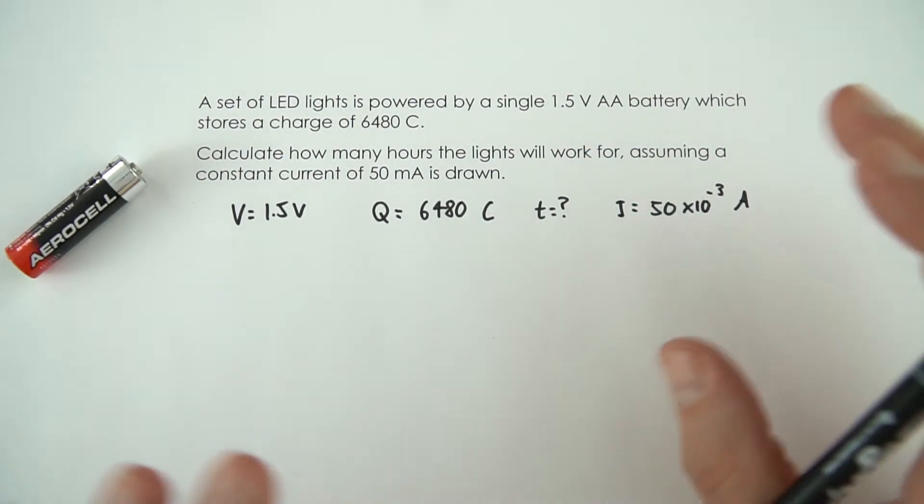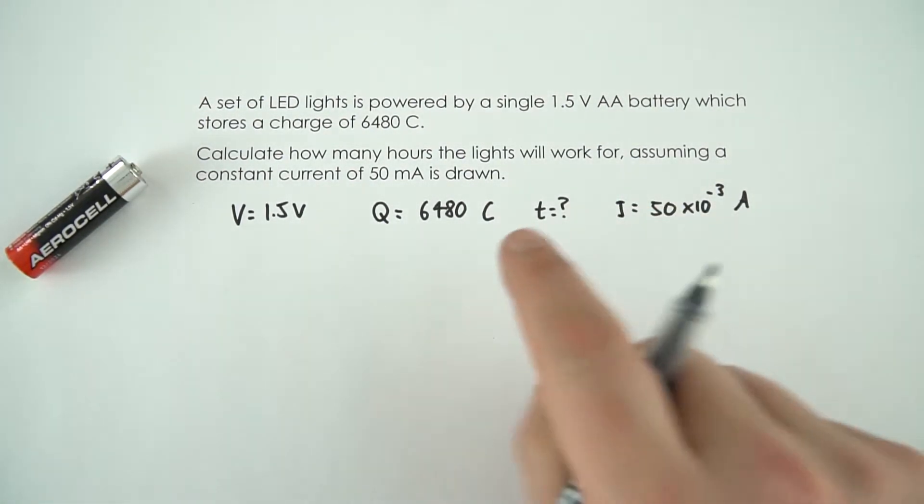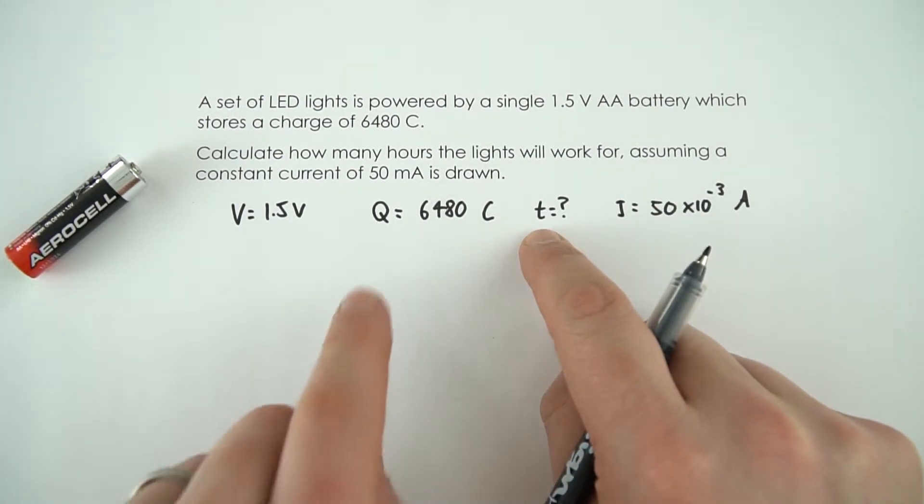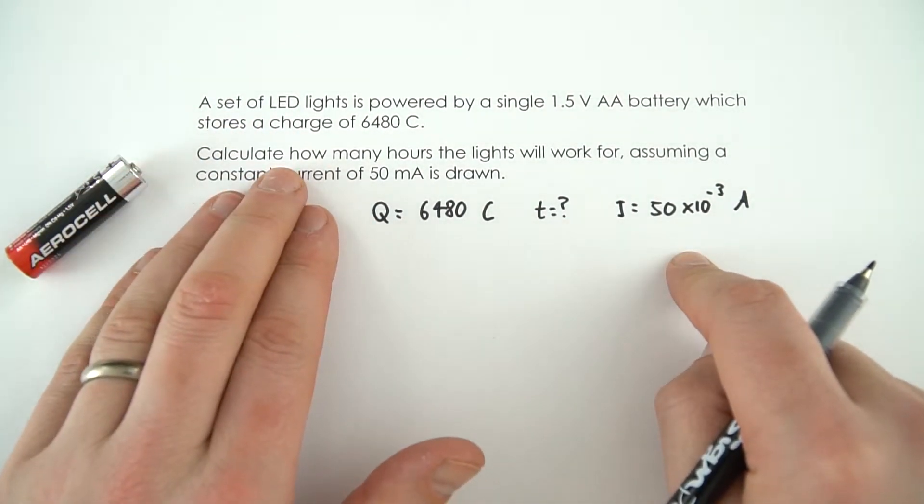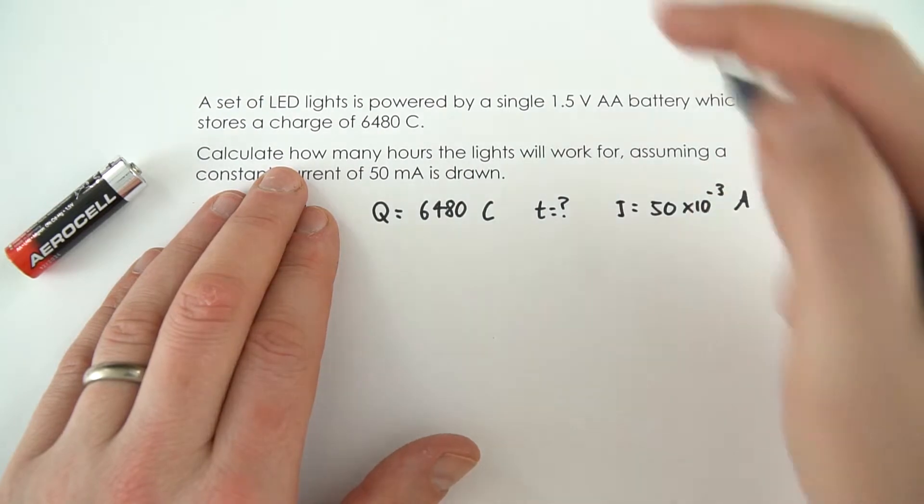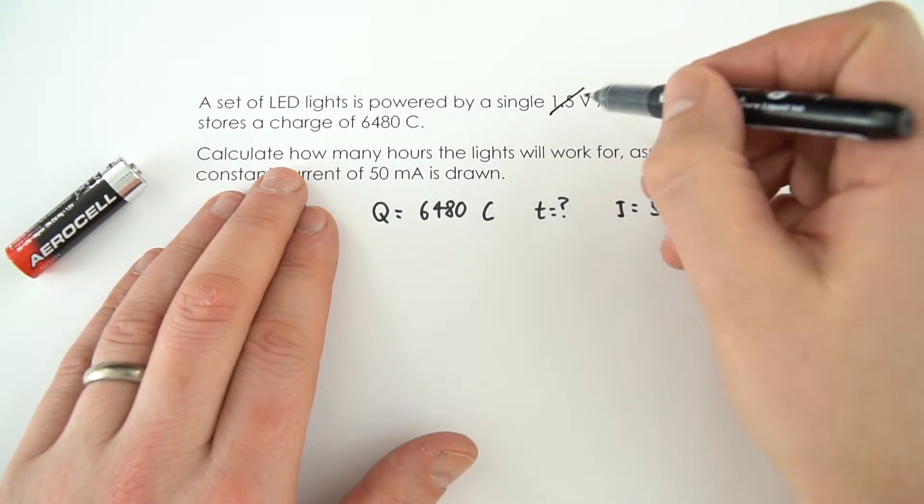Now this question has a bit of a red herring. In order to work out the time we only need to know the charge and the current and actually we don't need to know the potential difference of that cell. So this bit of data isn't actually needed in the question.